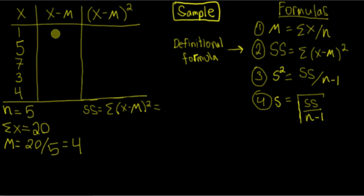Next order of operations is to fill in this column right here, x minus m. So all we're going to do is one minus four equals negative three. Five minus four equals positive one.